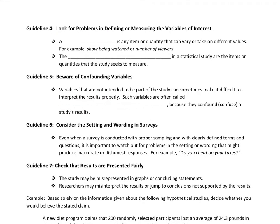Guideline number four: look for problems in defining or measuring the variables of interest. A variable is any item or quantity that can take on different values, such as the show being watched or the number of viewers. The variables of interest in a statistical study are the specific items or quantities the study seeks to measure. We have to make sure that the variable of interest is actually what we are studying and measuring.